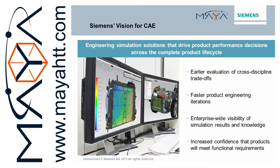The vision for Siemens PLM simulation is to deliver engineering simulation solutions that drive product performance decisions across the complete product lifecycle. This allows engineering organizations to achieve earlier evaluation of cross-discipline tradeoffs, faster product engineering iterations, enterprise-wide visibility of simulation results and knowledge, and increased confidence that products will meet functional requirements. Overall, this means that companies can use simulation to make smarter decisions and build better products.